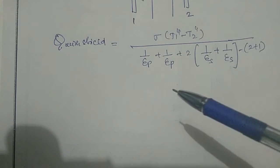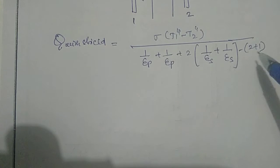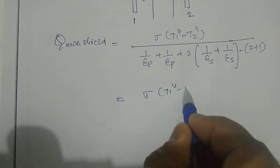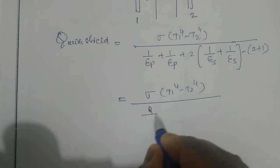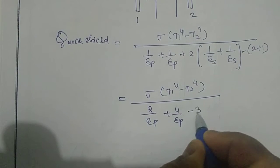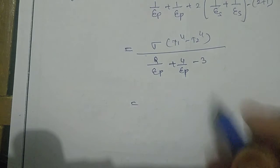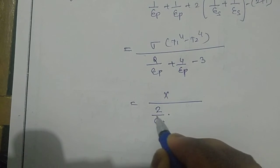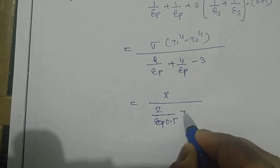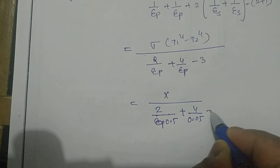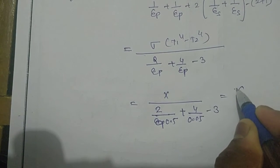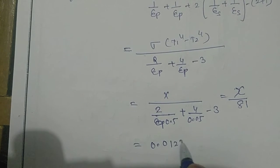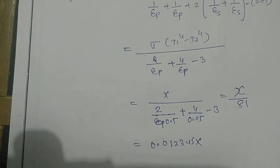When two shields are introduced between the two plates, we use this formula. Modifying the equation, we get σ(T1⁴ - T2⁴) divided by (2/εP + 4/εS - 3). Substituting εP = 0.5 and εS = 0.05, the denominator becomes 2/0.5 + 4/0.05 - 3 = 81, giving Q with shields = 0.012345x.